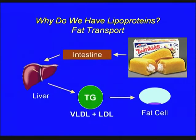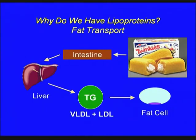Initially we take up the fats into our intestines and those fats are absorbed, but we don't transport them directly to adipose tissue. Instead, we send those fats to the liver via these very large particles that contain a lot of triglyceride called chylomicrons. The particles are disassembled in the liver and reassembled into VLDL and LDL that are secreted by the liver, and those particles actually transport the nutrient-rich triglycerides to the adipose tissue.